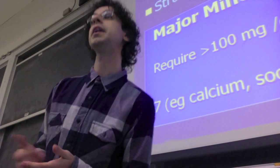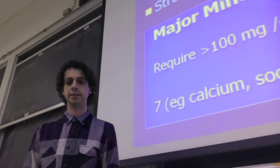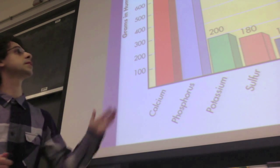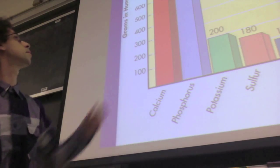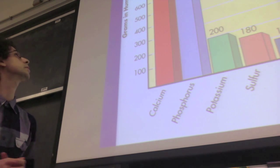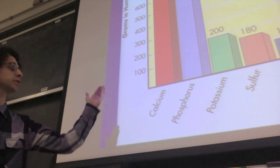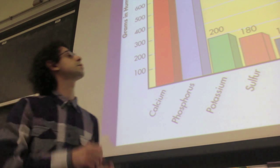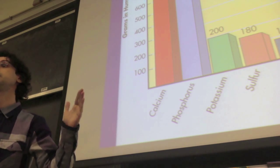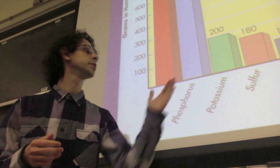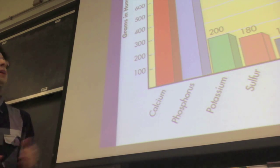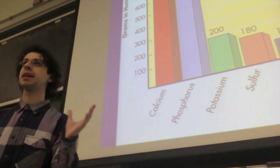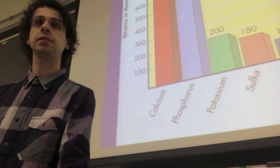Trace minerals are called that because we just need very small amounts, but that doesn't mean they are any less important — they are as essential as the major minerals. We have nine recognized as essential, such as iron and zinc. This chart shows how much we have in our body. Calcium is the most abundant at about 1,200 grams; we also have phosphorus, potassium, sulfur, sodium, chloride, and magnesium as the seven major minerals, plus trace amounts of iron, manganese, copper, and iodide.